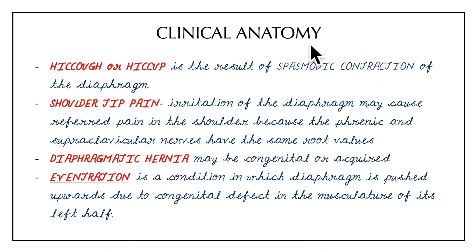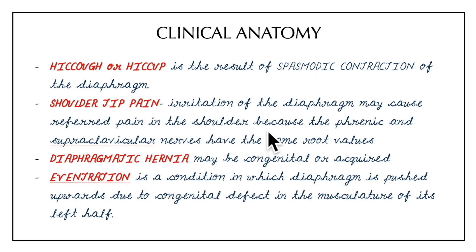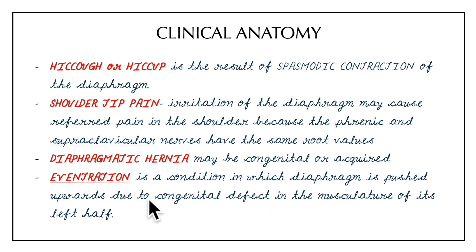Finally, the clinical anatomy of the diaphragm: hiccup is a result of spasmodic contraction of the diaphragm. Shoulder tip pain is due to irritation of the diaphragm causing referred pain in the shoulder, because the phrenic and supraclavicular nerves share the same root values. Diaphragmatic hernia may be congenital or acquired. Eventration is a condition in which the diaphragm is pushed upwards due to a congenital defect in the musculature of its left half.